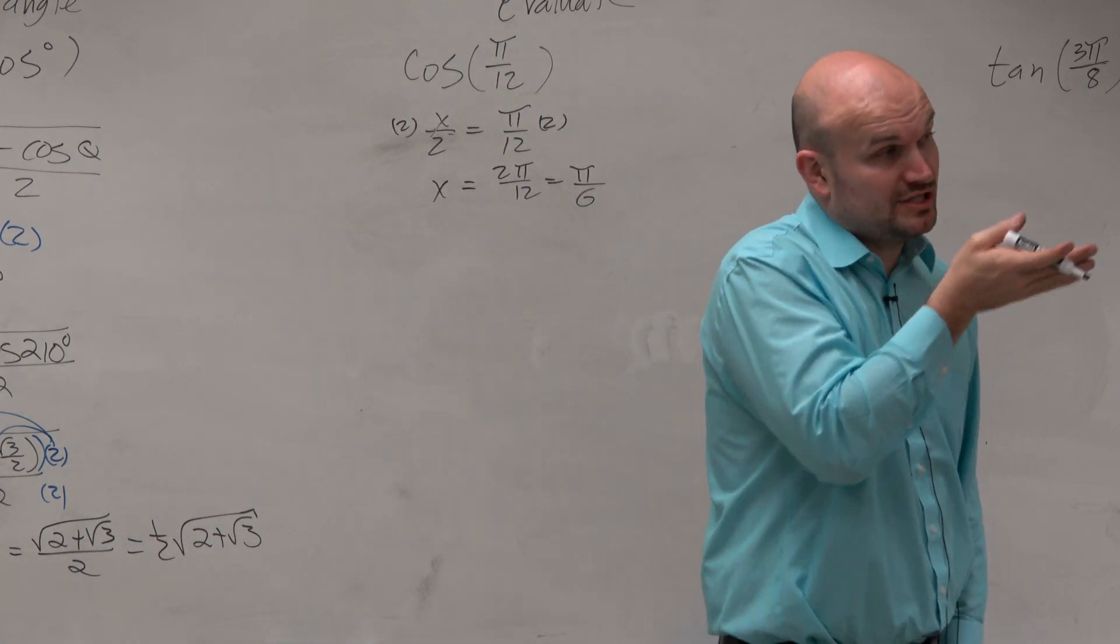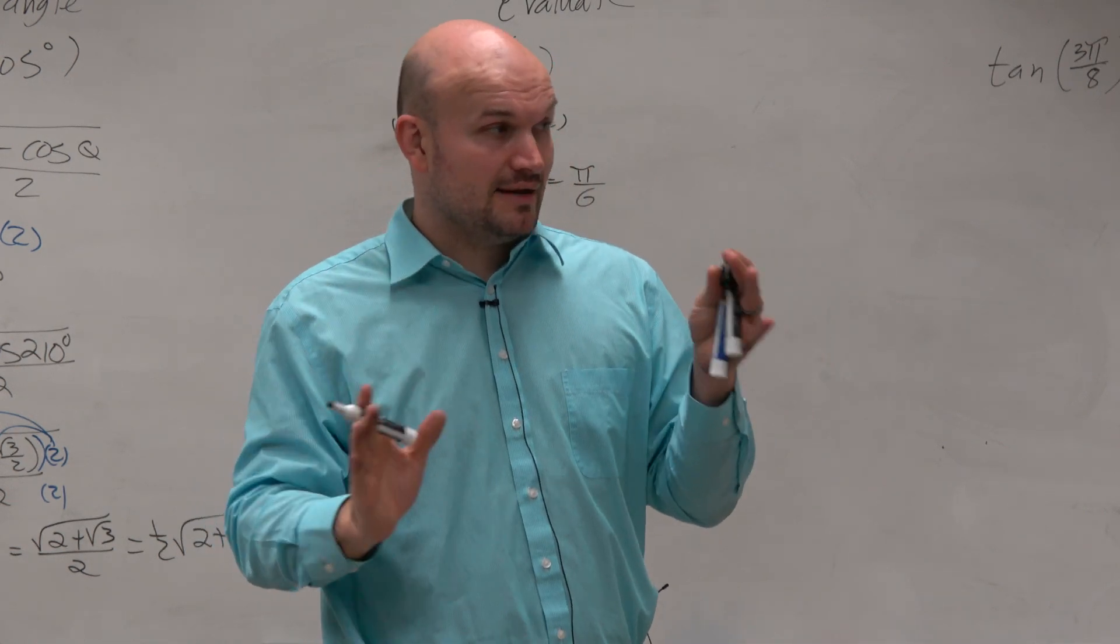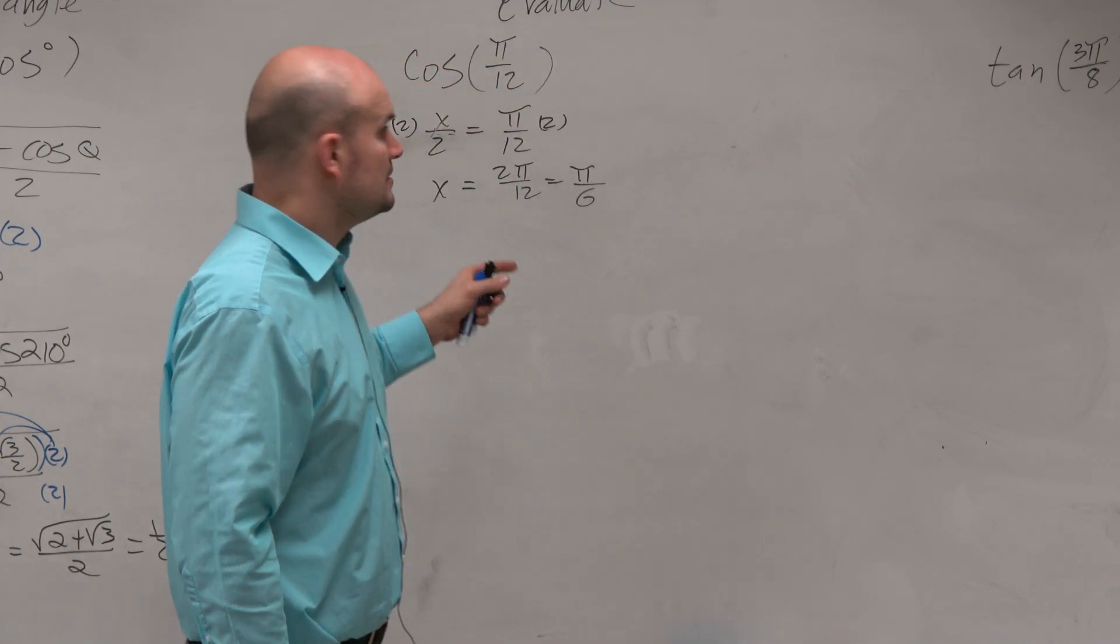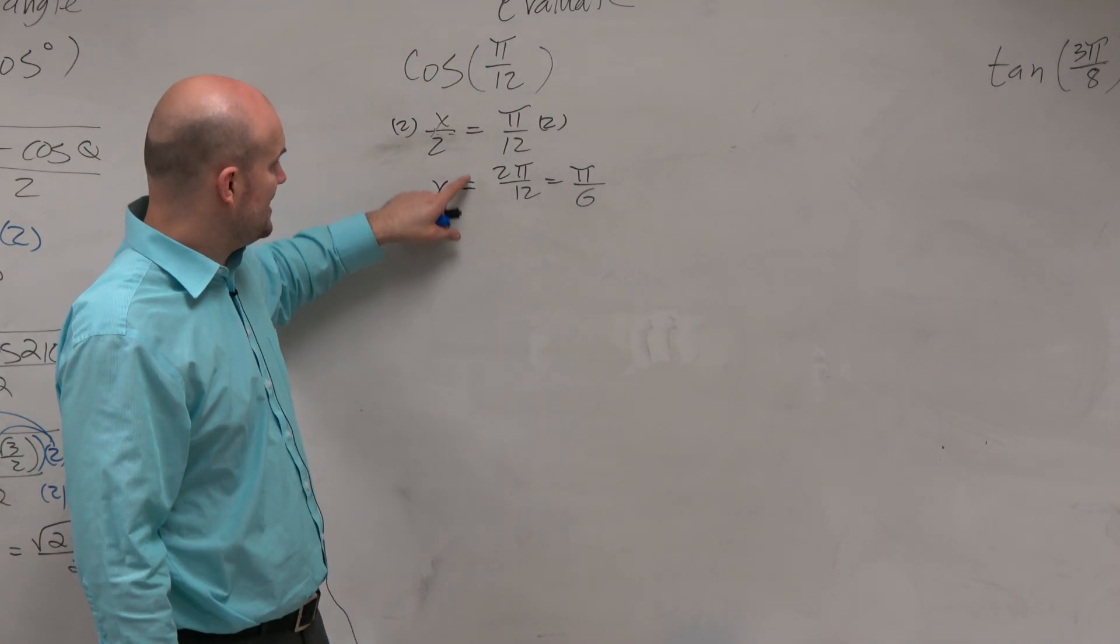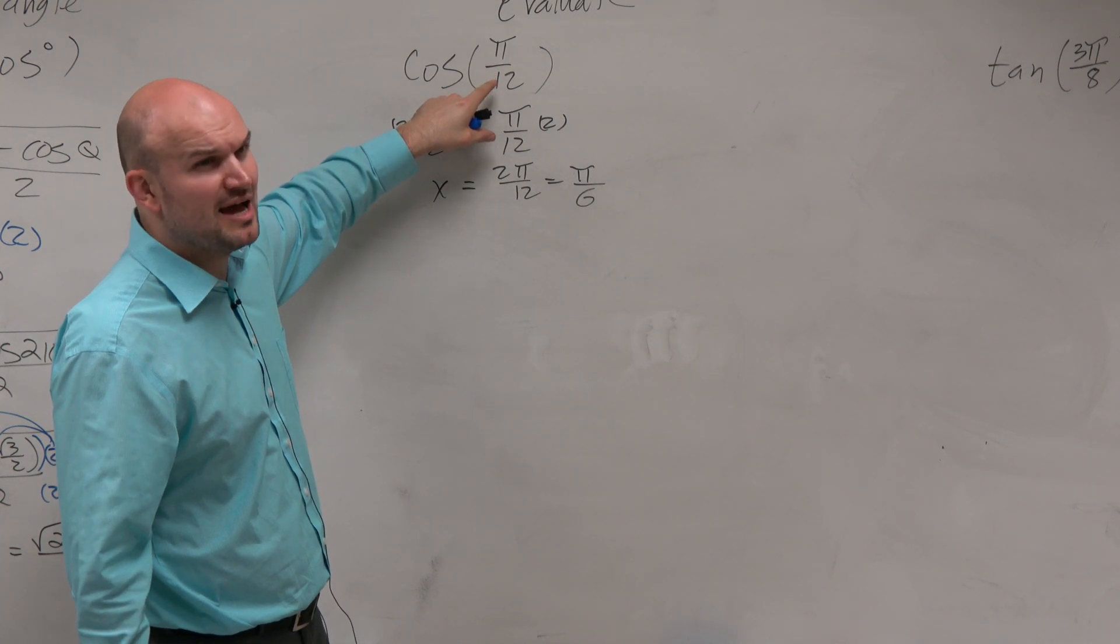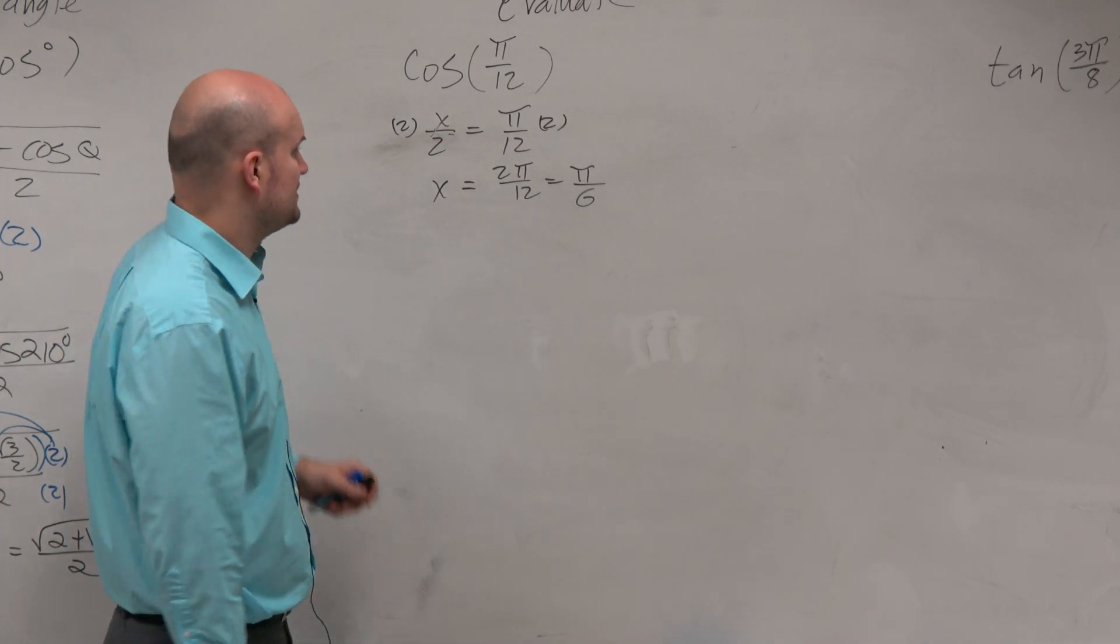So now we just use the formula for cosine. But again, we've got to check if positive or negative is the correct sign. What we recognize here is that π over 12, that's the half angle. That's definitely in the first quadrant, so therefore we're going to use the positive sign.